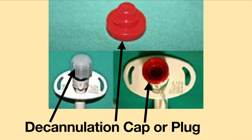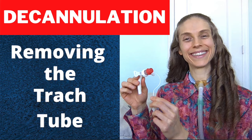Included with some tracheostomy tubes is a cap or plug which fits over the 15 millimeter connector. This is called a decannulation cap or plug. This is used when preparing a person for decannulation, which is the removal of the tracheostomy tube. For more information about decannulation, please see the video "Decannulation: When a tracheostomy tube is no longer needed."